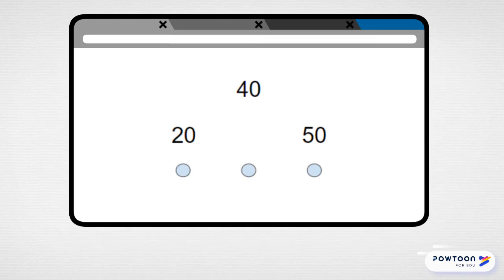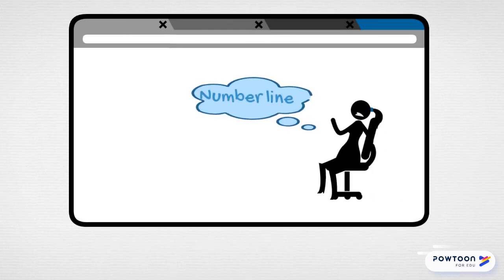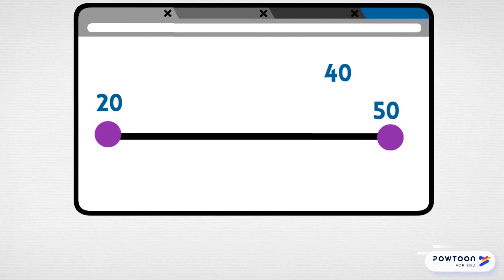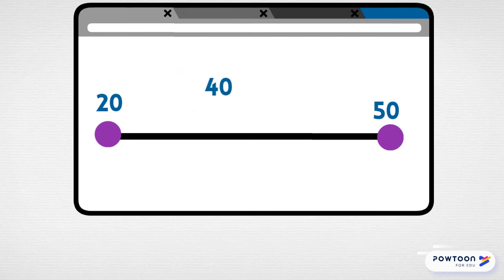Let's focus on the first problem on that page. This problem has a 40 on top, and then a 20 and a 50, and three dots. What we're supposed to figure out is if the 40 is closer to the 20, closer to the 50, or right in the middle. The best thing to do when you have a problem like that is to think of a number line. A number line is the best way to figure out whether the number you're looking at is closer to one number or another. So our number is 40, and I need to know whether it's closer to 20 or to 50. If I count by tens, that might be able to help me. After 20, we have 30, then we have 40, and then 50. So that means that 40 is closer to 50. We figured it out with the number line.